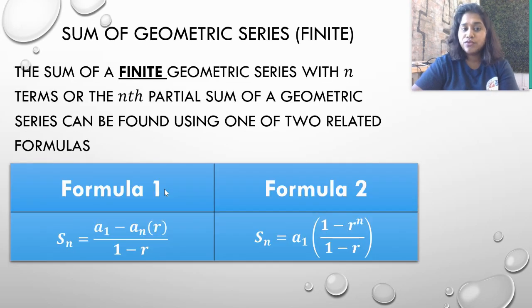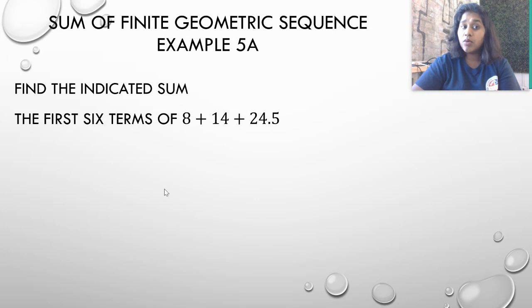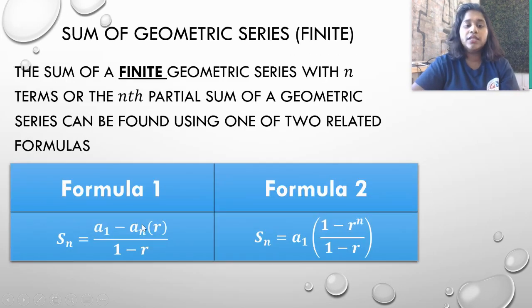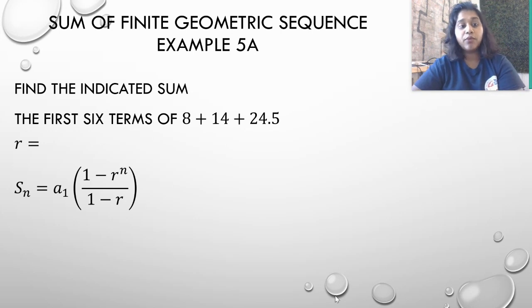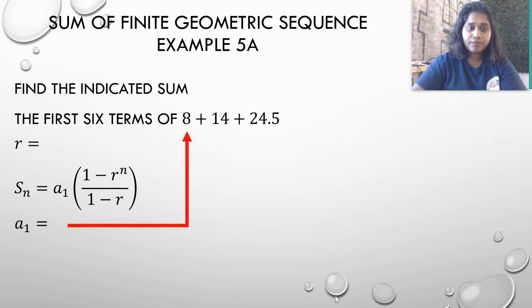So again, if we have our two formulas, what do we know here? Well, we know the n-value is going to be 6. We know our ratio we can solve by dividing 14 by 8 and 24.5 by 14. And we know our first term is 8, but we don't know the last term. So it's probably safer to use this second formula. But let's go ahead and dive on through. So we're going to find that common ratio. And again, we're going to use the second formula because we don't know the last term. Let's go ahead and solve, our a sub 1 is 8. Let's go ahead and solve our common ratio.